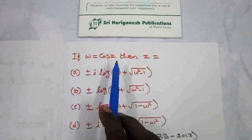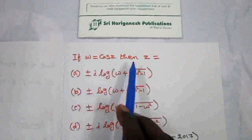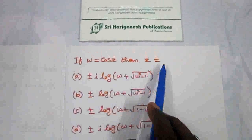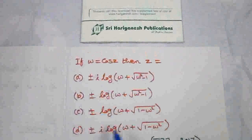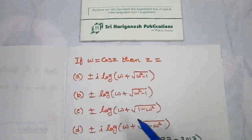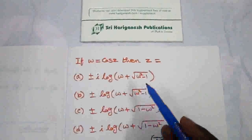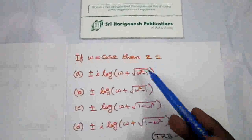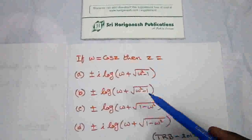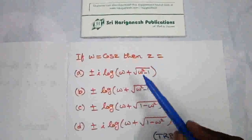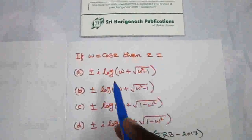If w is equal to cos z, then z becomes any one of the given options. To find the value of z, I am going to find the value from the options.